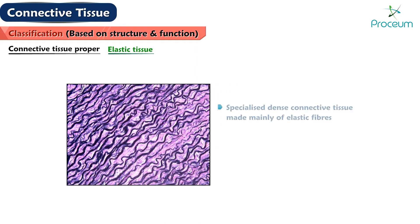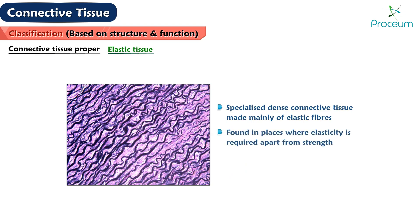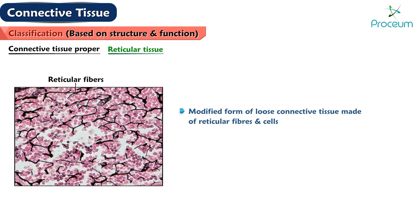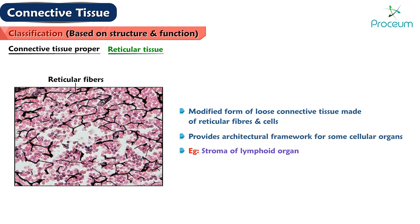Elastic tissue is a specialized dense connective tissue made mainly of elastic fibers. It is found in places where elasticity is required apart from strength — for example, ligamentum nuchae. Reticular tissue is a modified form of loose connective tissue made of reticular fibers and cells. It provides the architectural framework for some cellular organs — for example, stroma of lymphoid organs.